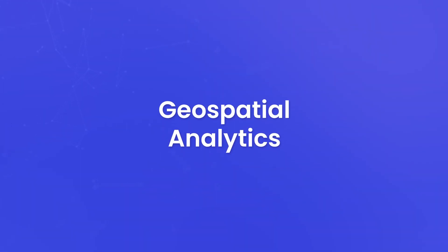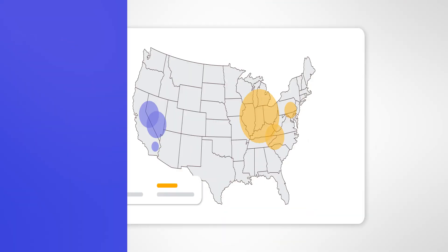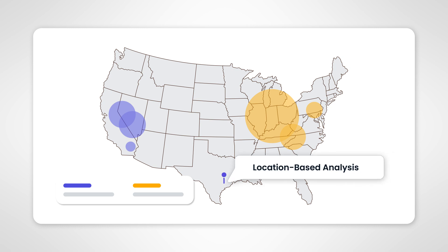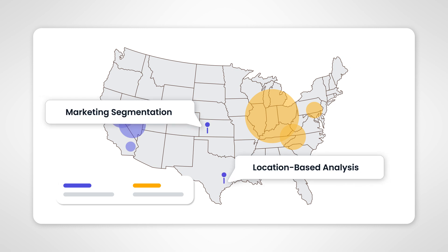Geospatial Analytics — Location Matters. SAP Analytics Cloud offers geospatial analytical capabilities that let you visualize data on maps. This is invaluable for location-based analysis, marketing segmentation, and territory planning. Imagine seeing your data on a map, revealing insights that might have remained hidden otherwise.